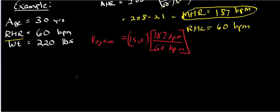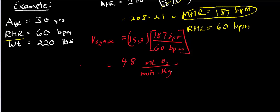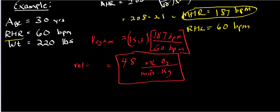So the VO2 max is approximately 48 milliliters of oxygen per minute per kilogram. This is your relative VO2 max, which is independent of the mass of the person. So a 100-kilogram person would have a smaller absolute VO2 max than someone who is 200 kilograms. The relative VO2 max still has kilograms in the units, which is why we still see kilograms there.